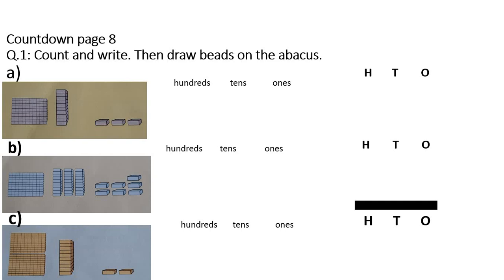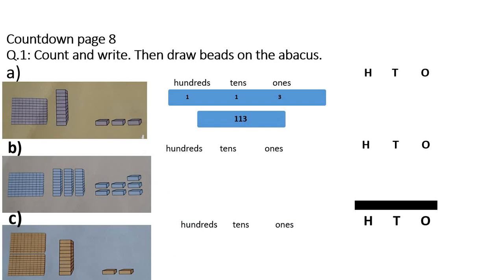Question number 1 is: count and write, then draw beads on the abacus. This is part A. This block stands for hundreds, this bar stands for tens, and these small blocks stand for ones. You will count how many hundreds: 100. How many tens: 110. How many ones: 3 ones. So you will write it under these columns and write 113.